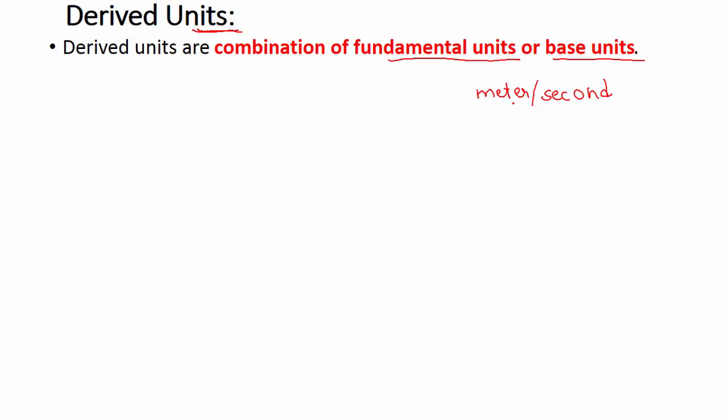Like meter per second is a derived unit because this unit is made of meter and second. The same way meter per second square is also made by meter and second times second. So these units are made by base units or fundamental units, so these units are called derived units.